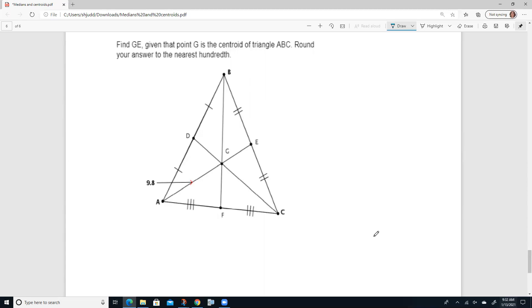Given that point G is the centroid of the triangle ABC, round your answer to the nearest hundredth. Okay, so we're going to find GE. Okay, that's this point right here. We know that AG is 9.5.